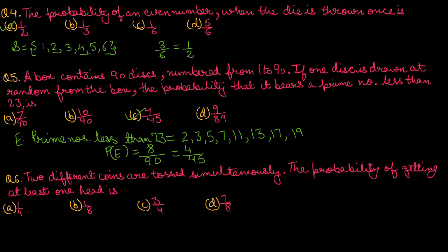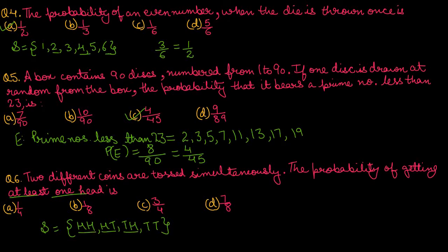Question number 6: Two different coins are tossed simultaneously. The sample space is HH, HT, TH, TT — total 4 cases. The probability of getting at least one head: favorable cases are HH, HT, TH — that is 3 cases. In TT there is no head. So our probability of getting at least one head is 3 upon 4. Option number C is correct.